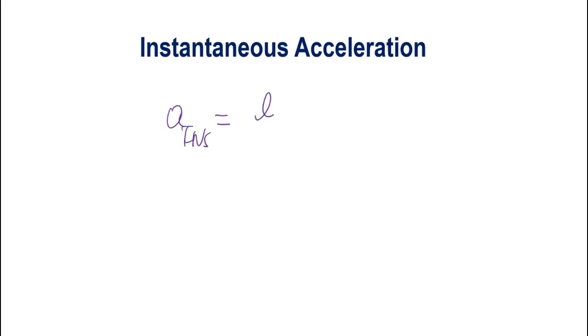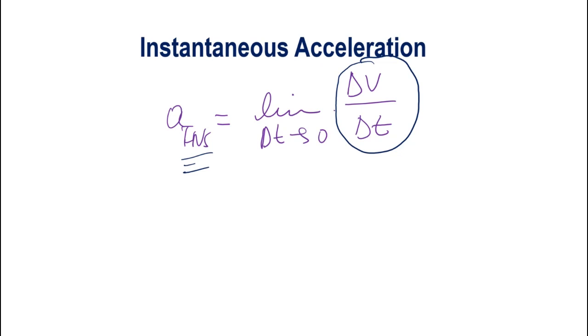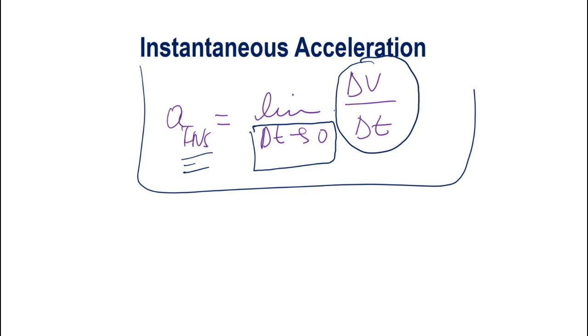The instantaneous acceleration is the average acceleration when the time interval is infinitesimally short, given by the limit as delta t goes to zero of delta V over delta t. I will explain this point in more detail in future videos. If you have any questions, put them in the remarks and I will address them.